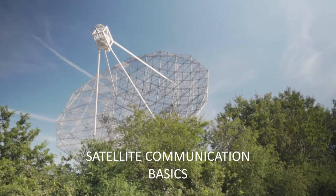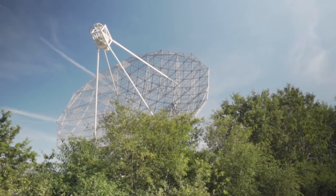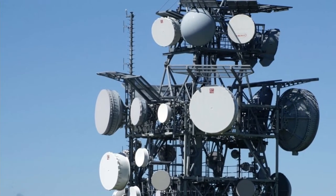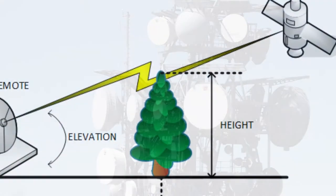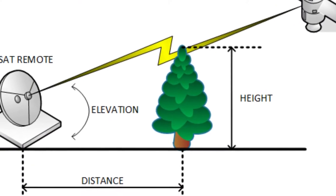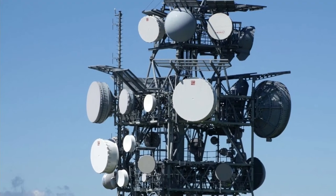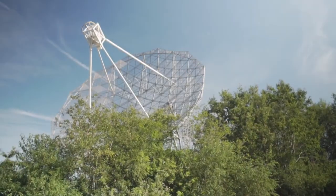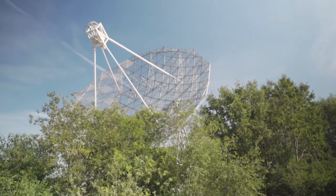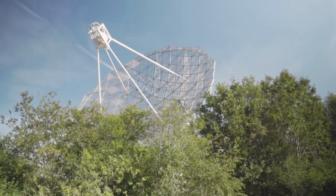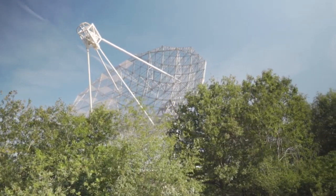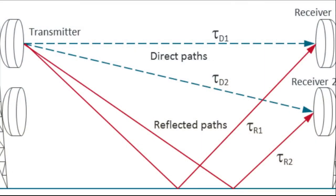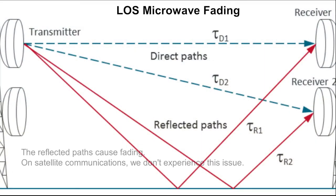Satellite communications is an extension of LOS microwave technology; the satellite must be within line of sight of each participating earth terminal. We are more concerned about noise in satellite communication links than with LOS microwave, as received signals will be of a much lower level. On satellite systems operating below 10 gigahertz, very little link margin is required and there is no fading as experienced with LOS microwave. This discussion deals only with geostationary orbit communication satellites.